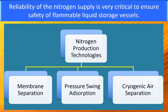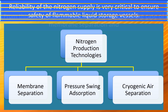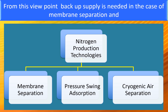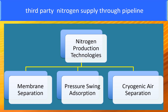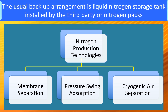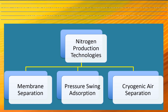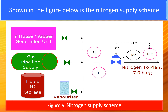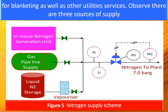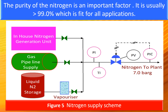Reliability of the nitrogen supply is very critical to ensure safety of flammable liquid storage vessels. From this point of view, backup supply is needed in case of membrane separation technology and third-party nitrogen supply through pipeline. The usual backup arrangement is a liquid nitrogen storage tank installed by a third party, or nitrogen packs. The purity of the nitrogen is an important factor, usually greater than 99%, which is fit for all applications.